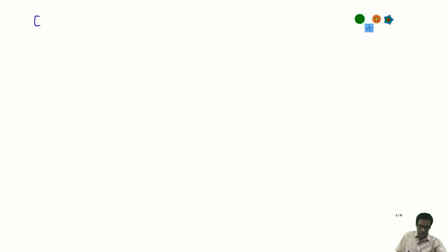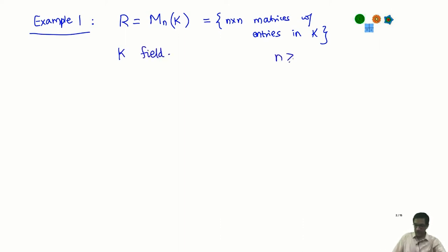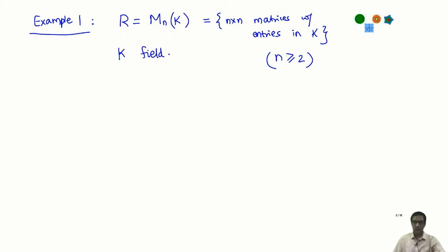Example 1: the ring R equals Mn(K), the ring of n×n matrices with entries in the field K. If n is greater than or equal to 2, this is not a commutative ring. If n is 1, this is just the field K itself, where modules over K are just vector spaces. I want to look at the situation for n ≥ 2 and give some examples of modules.